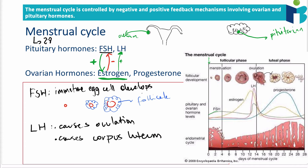The corpus luteum releases a new hormone, progesterone. When newly formed, it releases large amounts of progesterone, so progesterone levels rise in the bloodstream. However, the corpus luteum degrades over time — it takes roughly 14 days to break down — so progesterone levels first increase as the corpus luteum forms, then decrease as it breaks down.